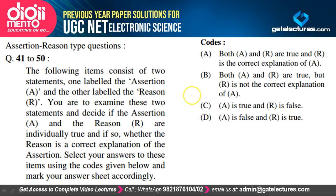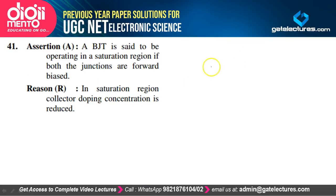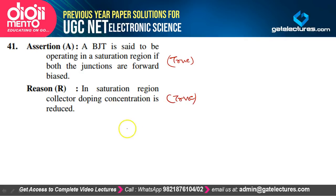Assertion-Reason: A BJT operates in saturation when both junctions are forward biased — true. In saturation, collector doping concentration is reduced — true. But R is not the correct explanation of A, because collector doping is reduced not due to saturation per se but because collector is not an emitter. Option B is correct.